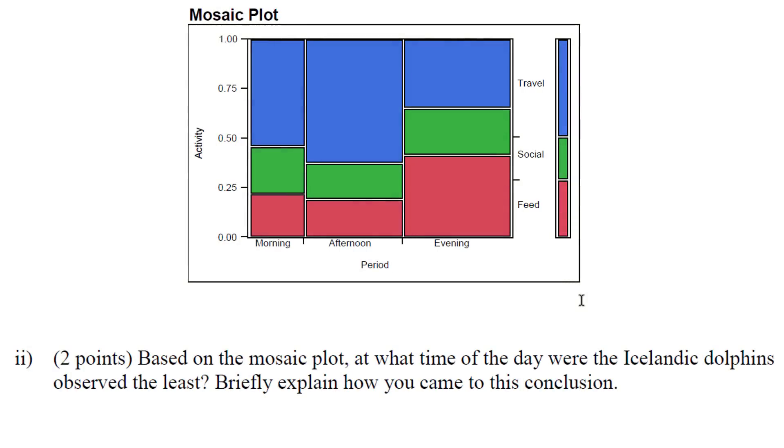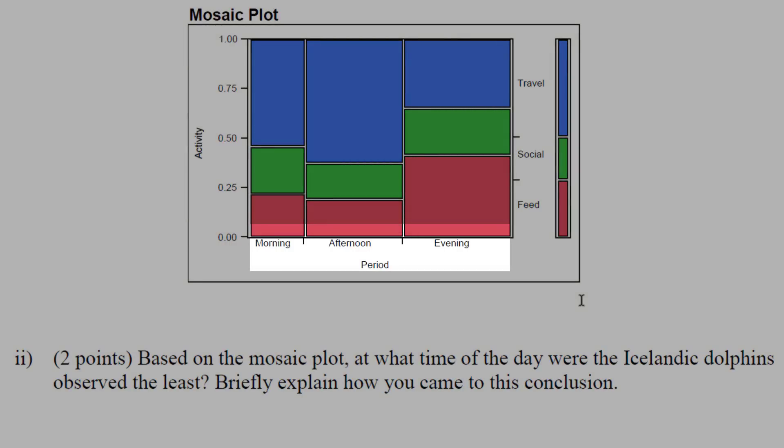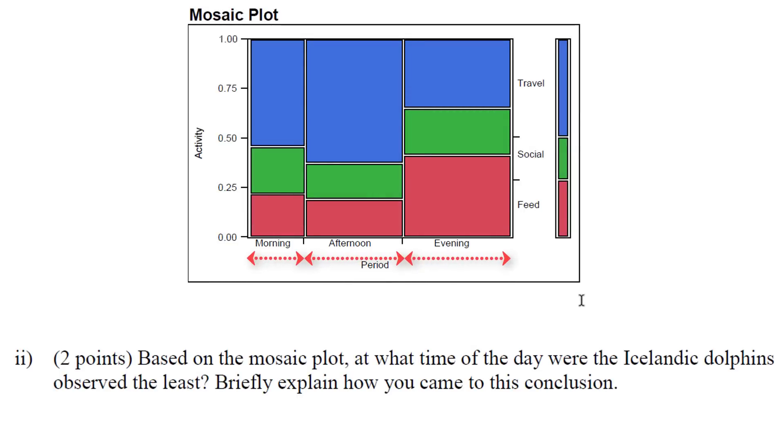If we want to figure out at what period they were observed the least, we can look at the marginal display for period. What you'll notice here is that there is one of these that is much smaller than the others. Afternoon and evening are of about similar size, but morning is the smallest. The width of the bars for the periods is how long they were observed, and so they were observed the least during the morning because the width of the bar is the smallest.